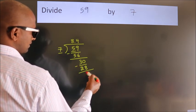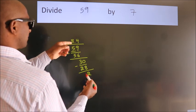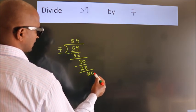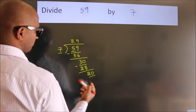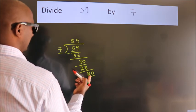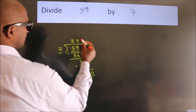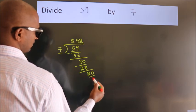After this, we already have the decimal. So directly take 0. So 20. A number close to 20 in 7 table is 7, 2, 14.